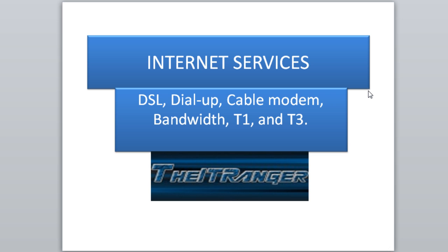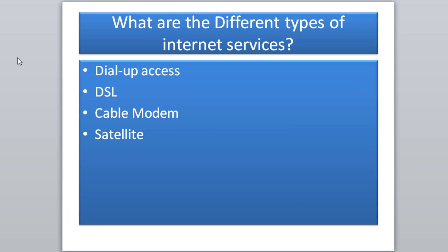We're going to be talking about DSL, dial-up, cable modem, bandwidth, T1 and T3 connections. Here are the different types of internet services: dial-up access, DSL, cable modem, satellite, and now you actually have fiber optic as well.